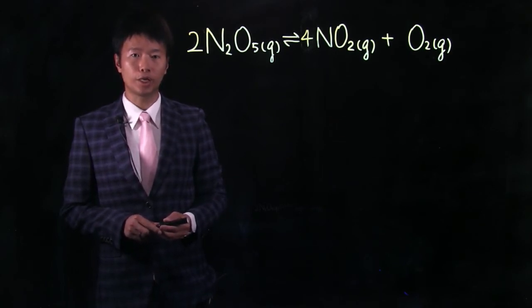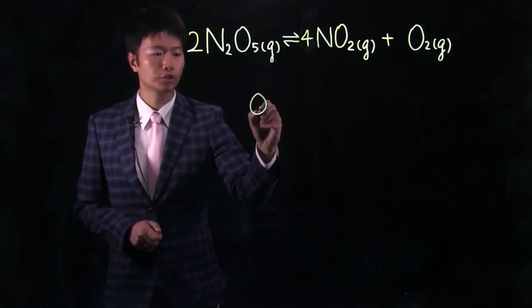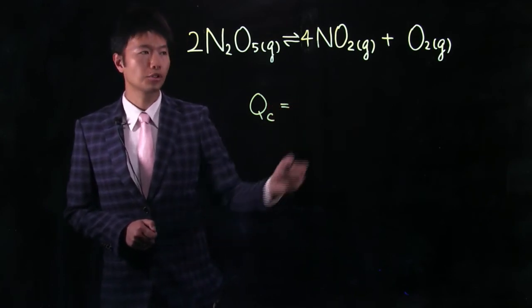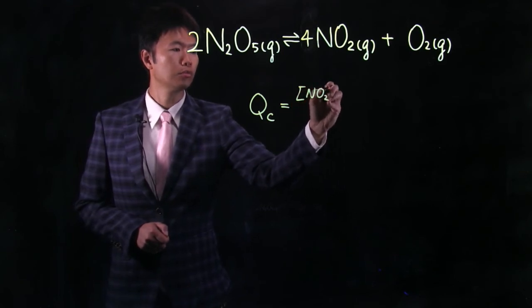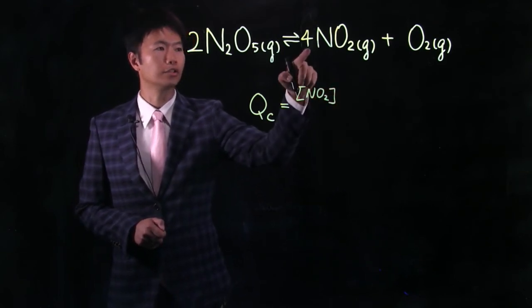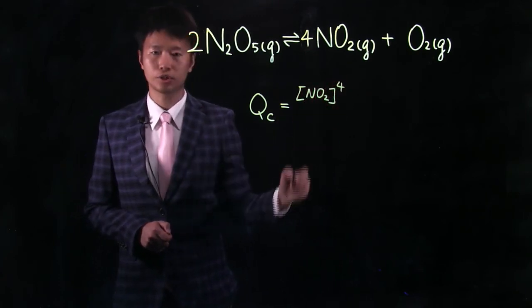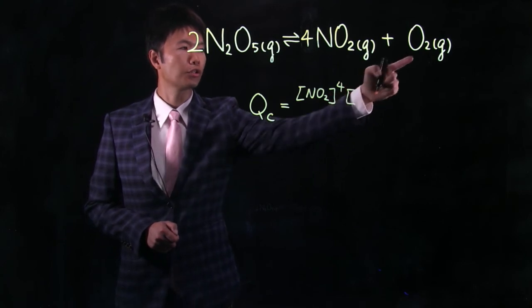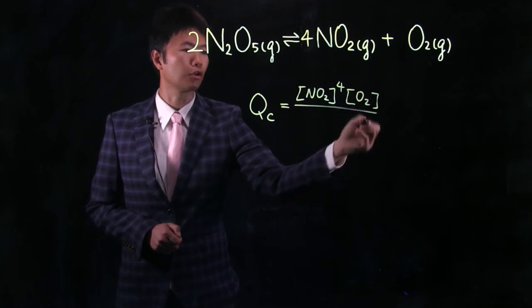We're ready to write down the reaction quotient for this reaction. The symbol for reaction quotient is Qc equal to the molar concentration of the product, NO2. And the stoichiometric coefficient will go to the power of the molar concentration, in this case a four, times the concentration of O2, to the first power, which we can omit.